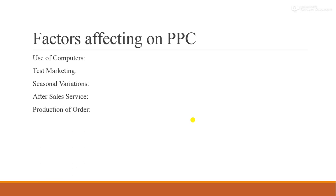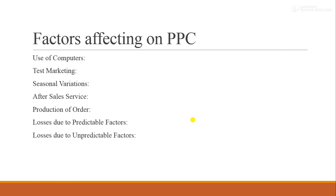Production order is another factor that affects PPC. Losses due to predictable factors — which we can anticipate — and losses due to unpredictable factors — which cannot be predicted — also affect production planning and control. Rejection and replacement also play a vital role. Design changes, when required, also affect our production planning and control.